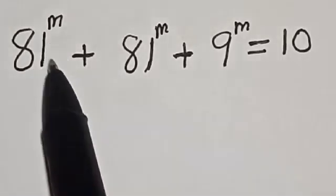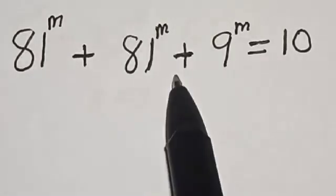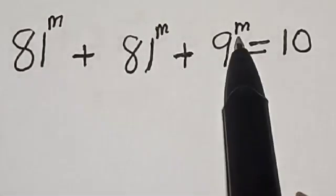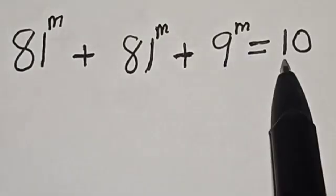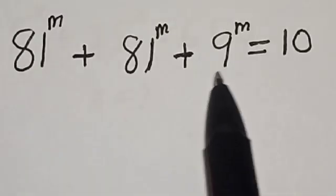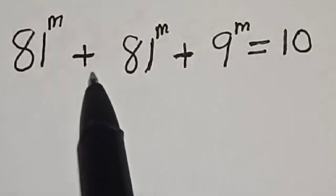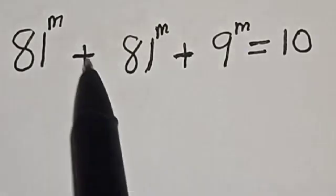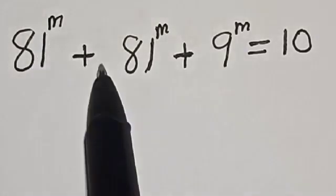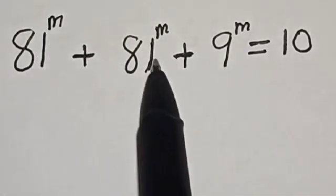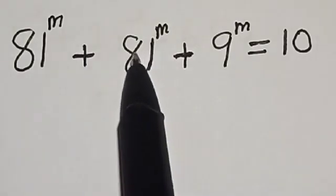81 raised to power m plus 81 raised to power m plus 9 raised to power m is equal to 10. Hi everyone, welcome to my class. In this class, we want to find the value of m from this given nice Olympiad exponential equation.